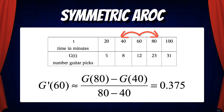For our symmetric average rate of change, we would have g prime of 60 is approximately equal to g of 80 minus g of 40 over 80 minus 40, and that gives us 0.375.